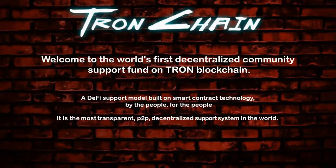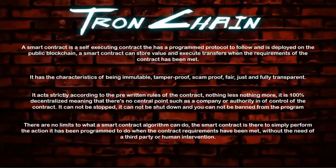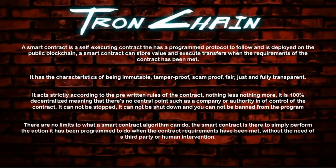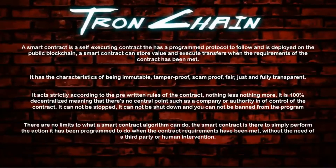It's a DeFi support model built on smart contract technology, by the people, for the people. It is by far the most transparent peer-to-peer decentralized support system in the world. A smart contract itself is a self-executing contract that has a program protocol to follow and is deployed on the public blockchain. A smart contract can store value and execute transfers when the requirements of the contract have been met. It has the characteristics of being immutable, tamper-proof, scam-proof, fair, just, and fully transparent, acting strictly according to the pre-written rules of the contract — nothing less, nothing more. It is 100% decentralized.